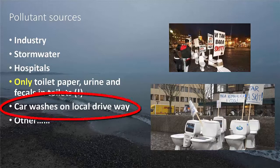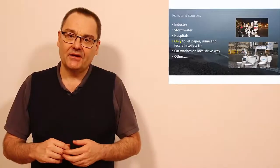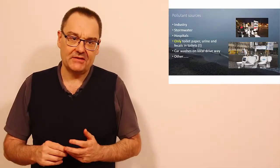Then we have, for instance, car washes on local drives. Today most petrol stations have a washing system where that water is recycled and treated before being pumped to either a separate system or a combined system. So the overall picture — combined piping network, separate piping network, different pollutant sources including hospitals, toilets, and car washes — is complex. It's very important that we control this.